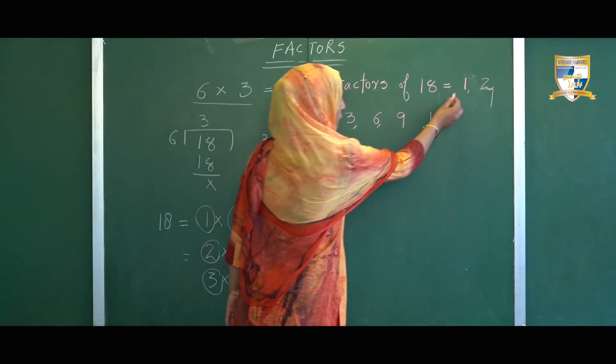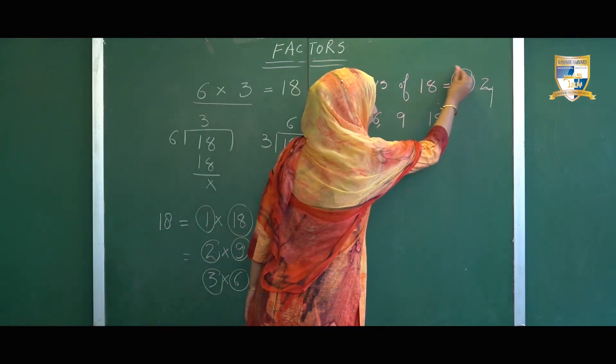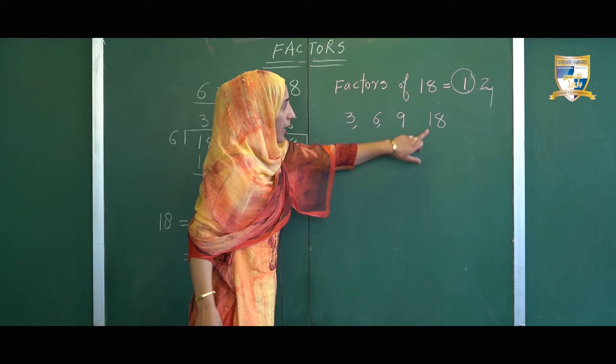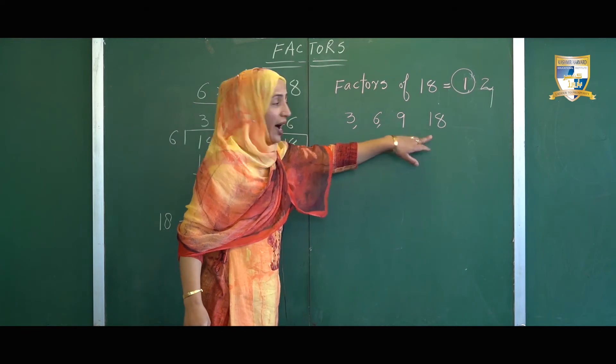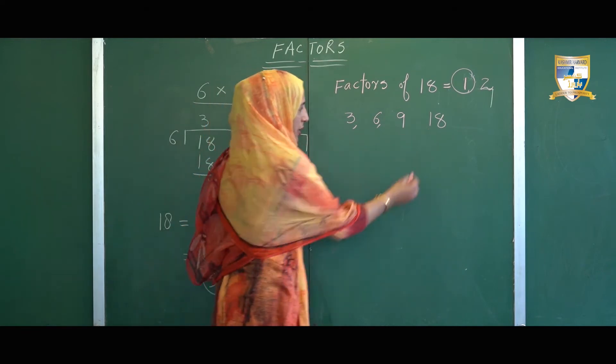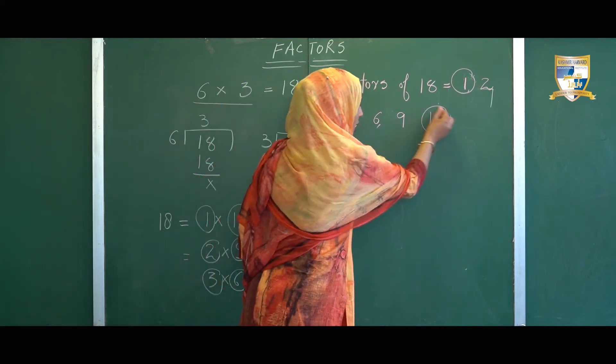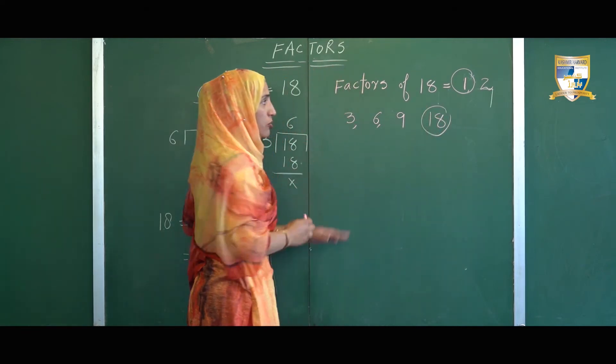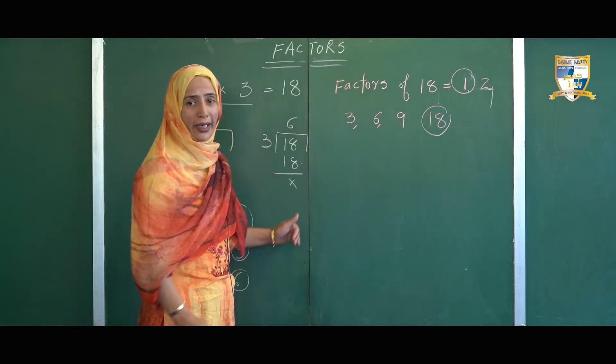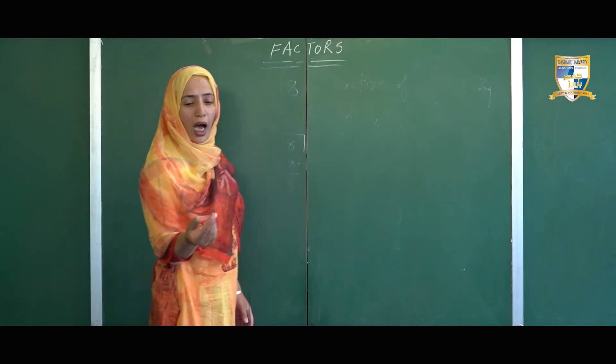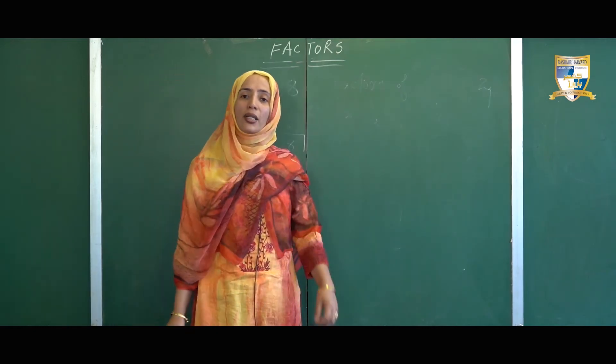Now have a look at all these factors: 1 is the smallest factor of 18, and 18 is the highest factor of 18. All the other factors are smaller than the number 18.